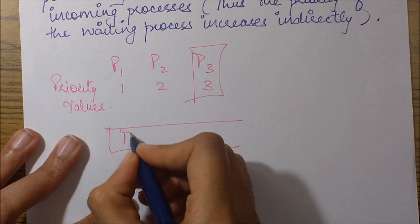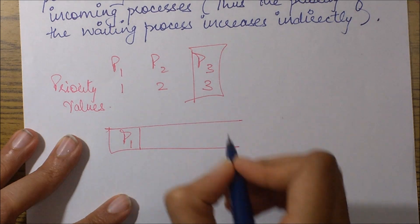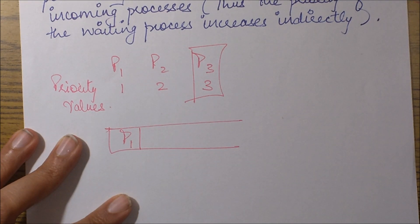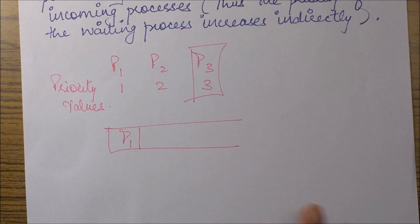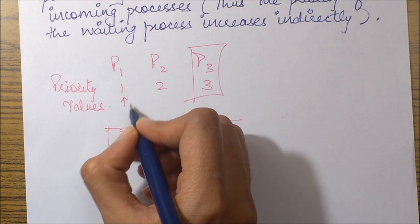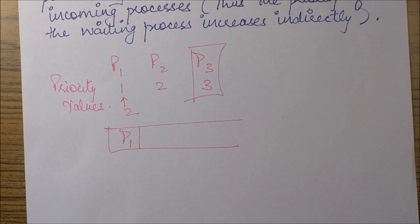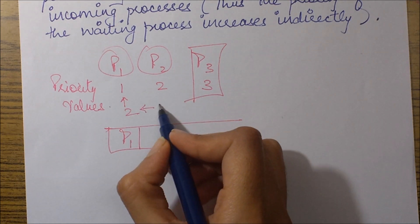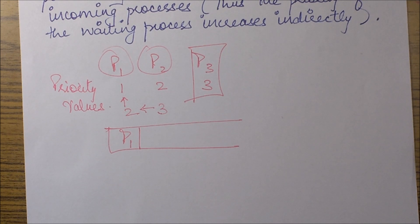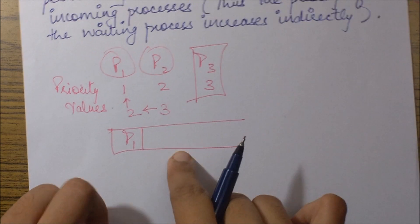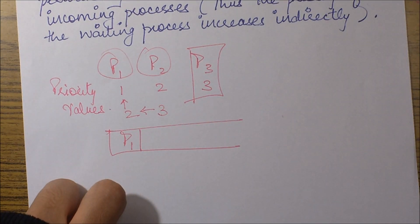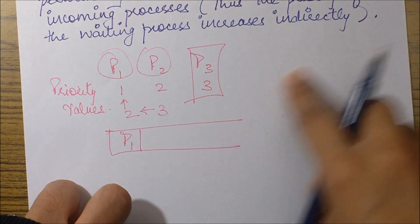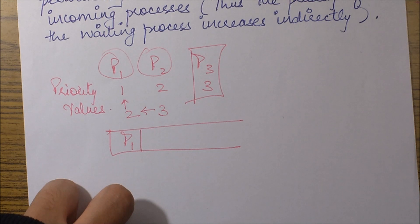Let's say P1 was executing and P2 and P3 were waiting. After some time, the OS will make P1's priority value 2. So now P1 and P2 have the same priority. After some more time, the OS will change the priority value of P1 to 3. This is the manner in which the aging technique operates. Now both P1 and P3 have lower priority, so the waiting process will be able to preempt P1.